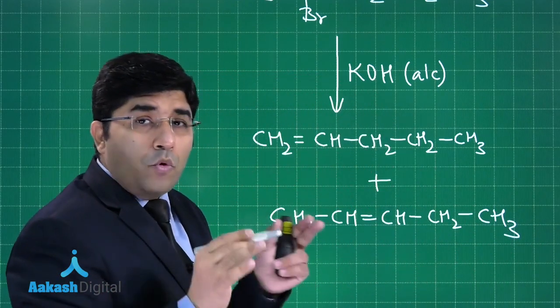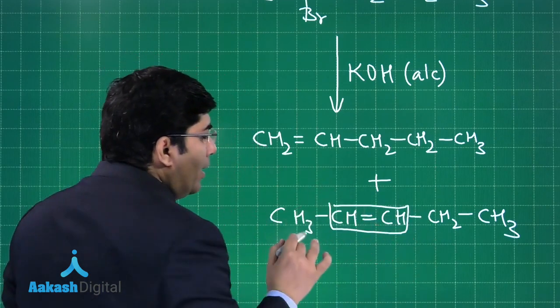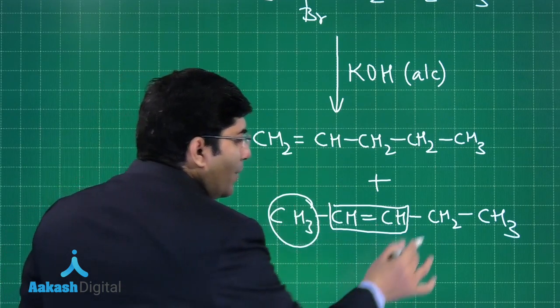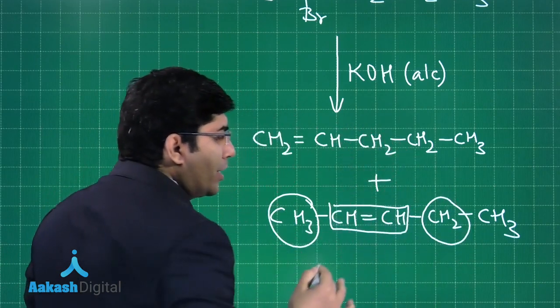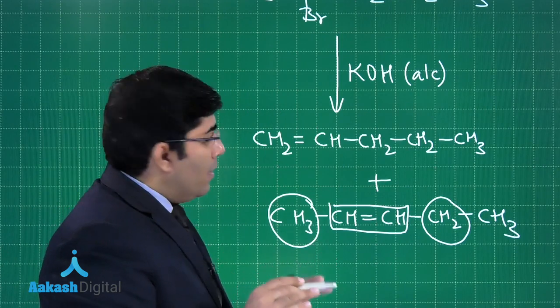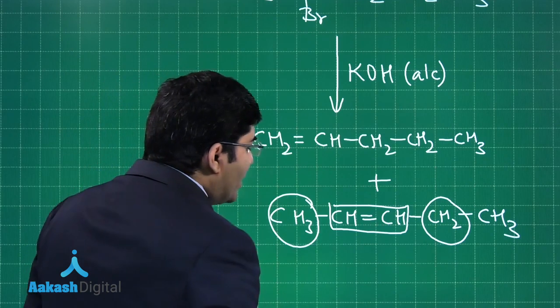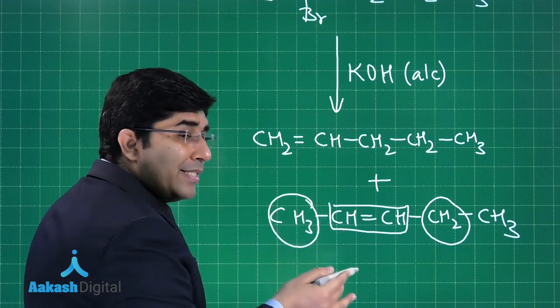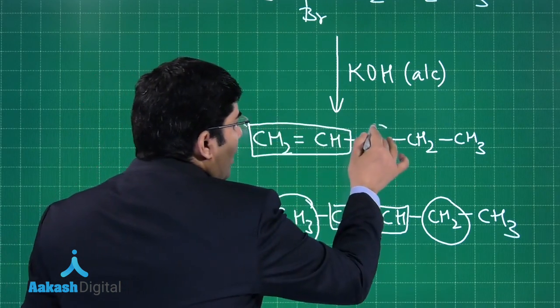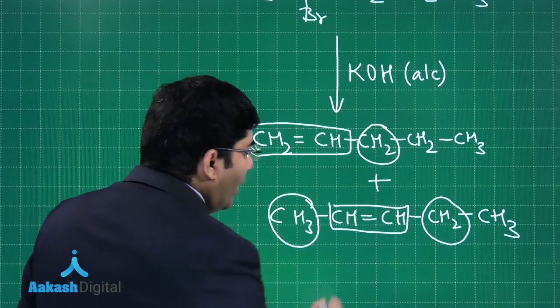This is the double bond. If you find the number of hyperconjugative structures in this case: three structures here possible and two structures there are possible, so total five hyperconjugative structures. This is the Zaitsev or Saytzeff product. In this case, the double bond has only two hyperconjugative structures possible, so this one will be the major product because it is more stable.